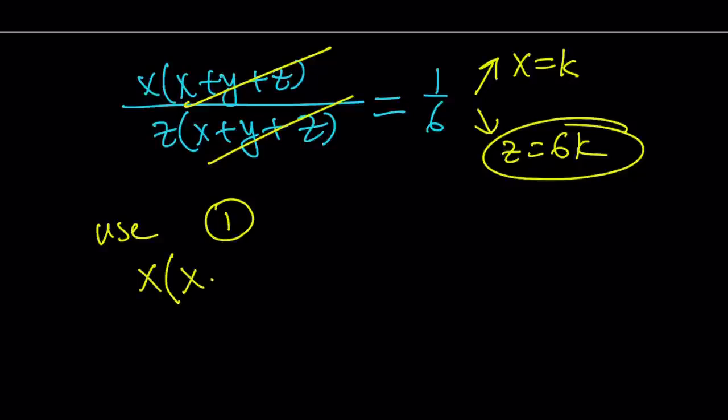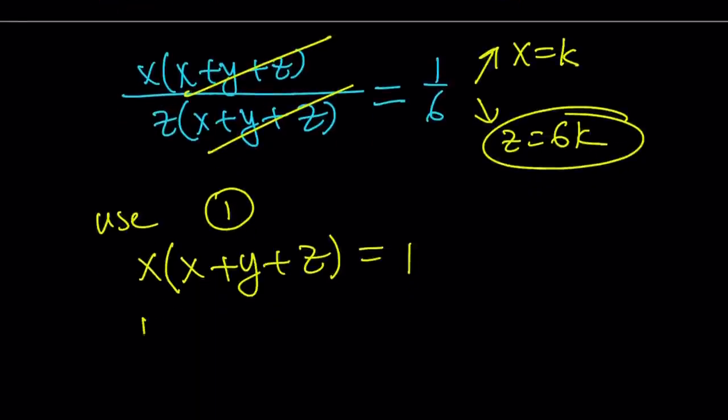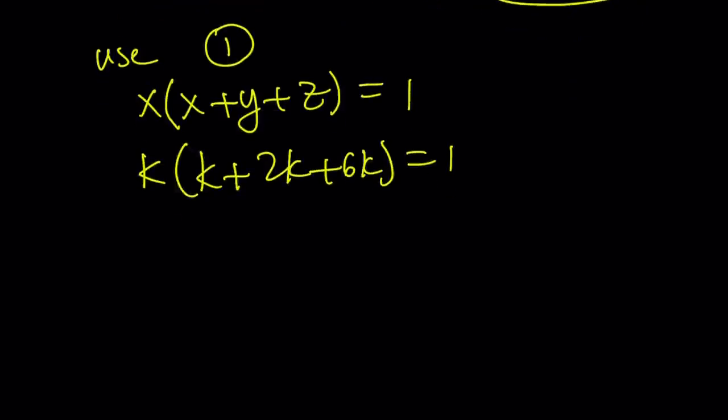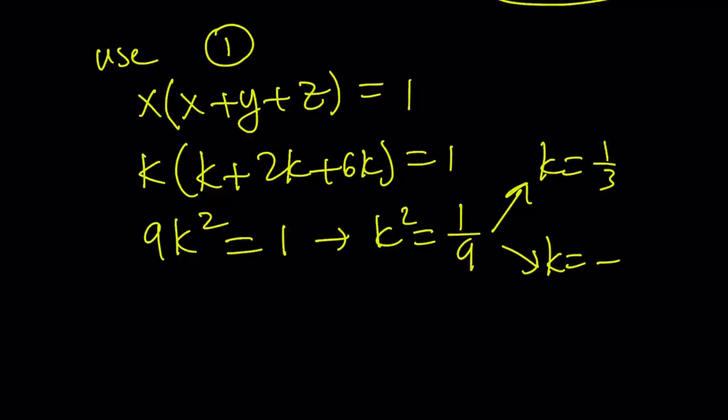Number one is x times x plus y plus z equals 1. Now, let's replace x with k and y with 2k and z with 6k. And this gives us the following. k plus 2k plus 6k is equal to 9k and then k times 9k is equal to 9k squared. And that equals 1. From here, we get k squared equals 1 ninth. And that gives us two solutions. k equals 1 third and k equals negative 1 third.